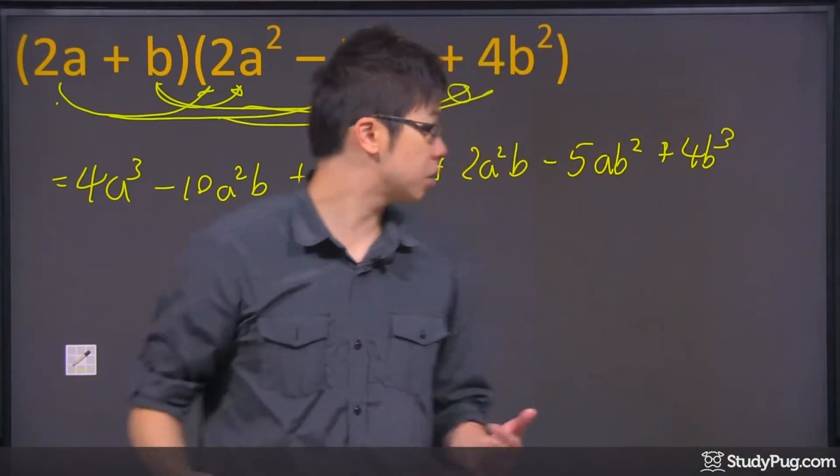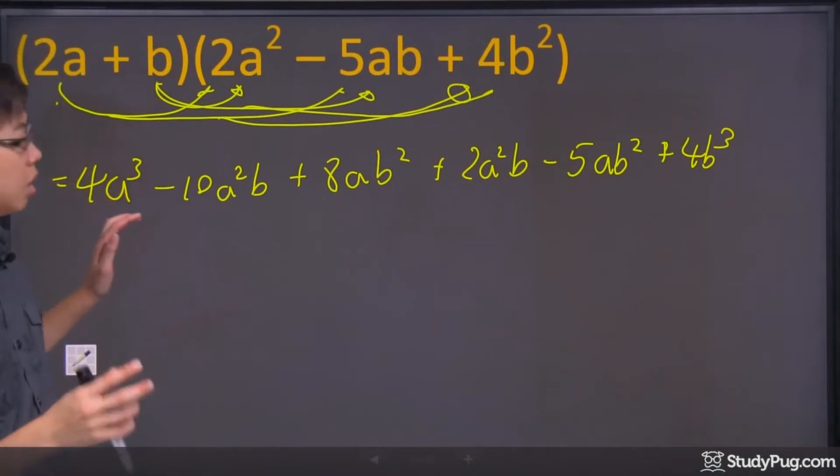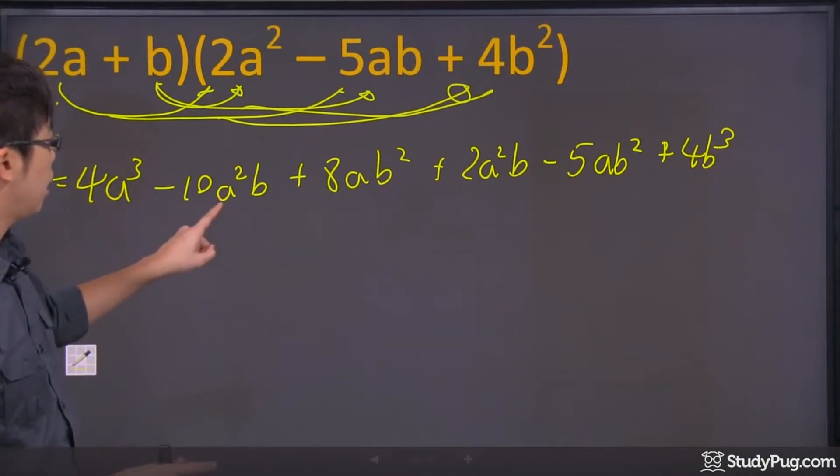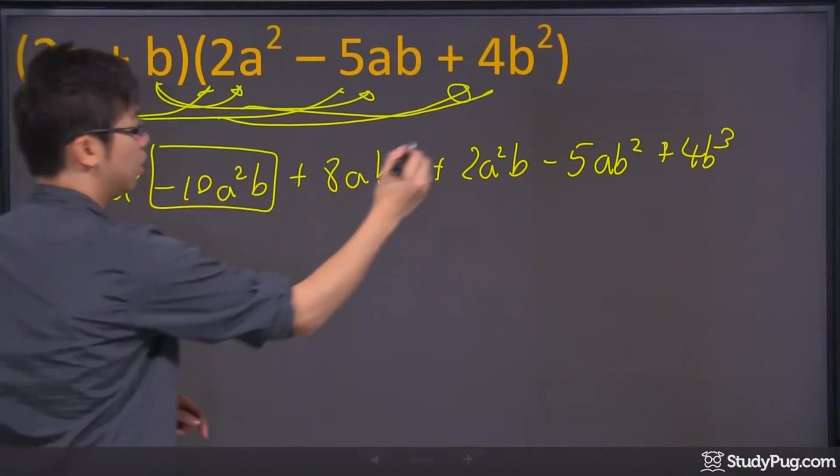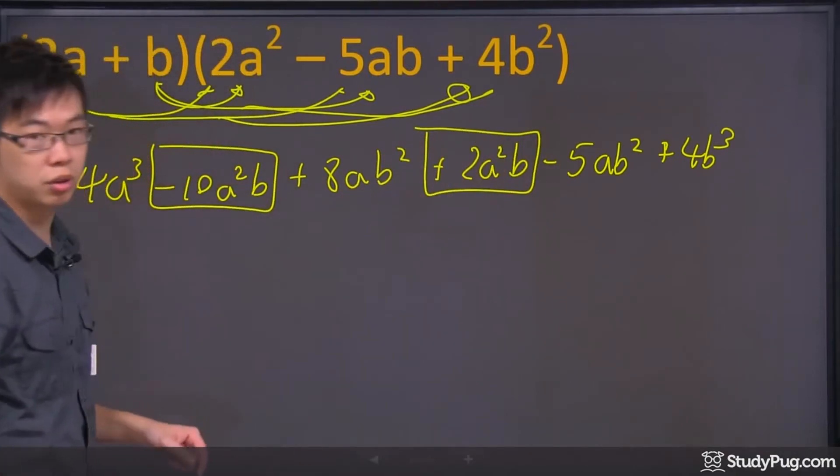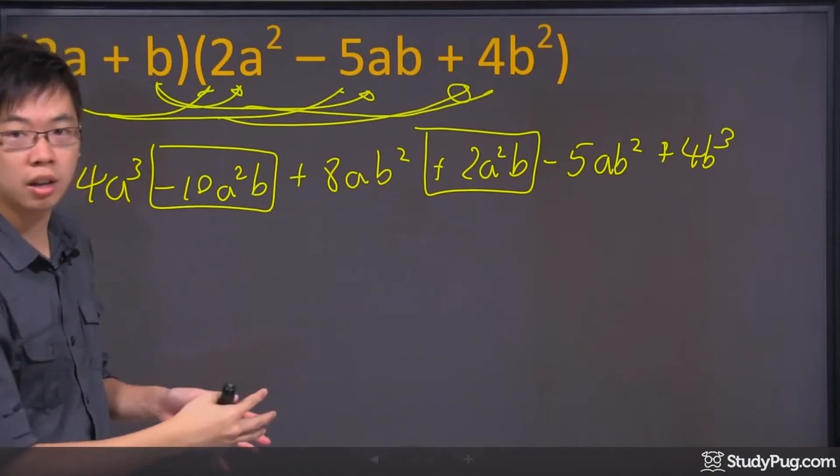And you're just going to have to double check, so if you look across right here, do you see anything that they have in common? I got the a squared b right here and a squared b right there. So these two guys, let's just put brackets around them, actually a square, they have to be collected as a like term.